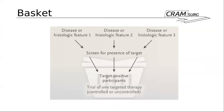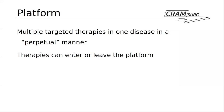To summarize basket protocols: a number of diseases share one common target — in this case, presumably COX — and one intervention is given while outcomes are observed. Now let's talk about platform trials, the third type of master protocol. Platform trials look at multiple targeted therapies in one disease in a perpetual manner, and therapies can enter or leave the platform. This is probably the most complicated of the three.